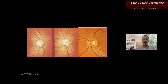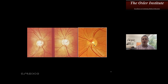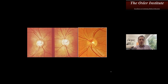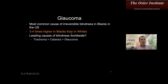IOP is the only variable we use to treat the disease, so it's still probably central in the definition. To show that cupping by itself is not necessarily glaucoma: this very cupped optic nerve actually looks very healthy — this was superior segmental optic atrophy. This patient had about a 0.1 cup-to-disc ratio three years prior and has become ocular hypertensive. The change over time in the setting of high IOP makes this a glaucomatous optic neuropathy.